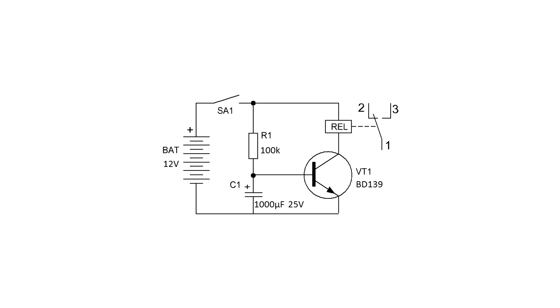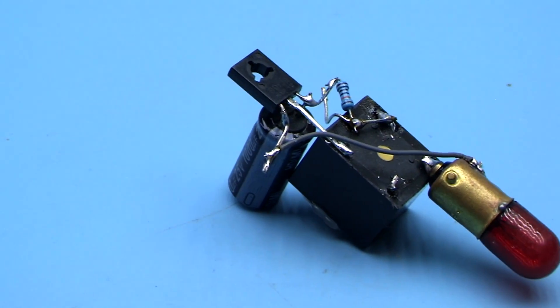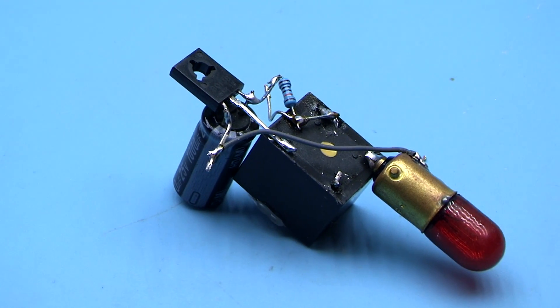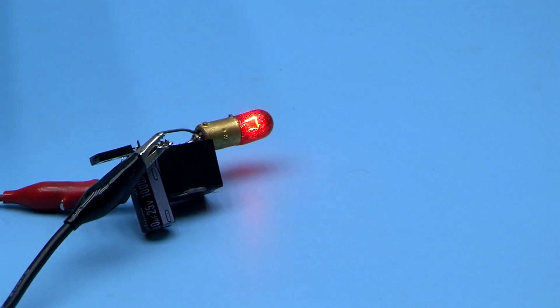The second circuit is a bit more complicated. Here, in addition to the capacitor, two other components were added: a resistor and a transistor. You can use any NPN transistors of low or medium power. This circuit is a delay-on system, something like a time relay.